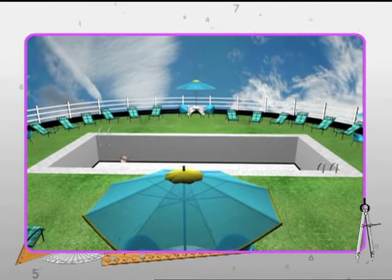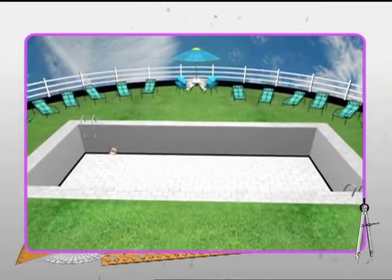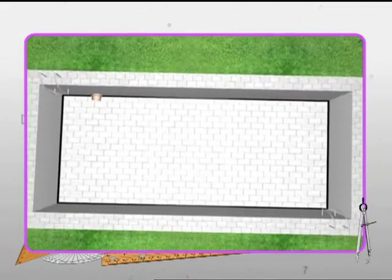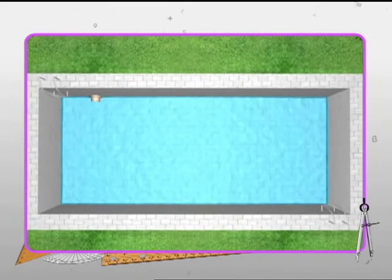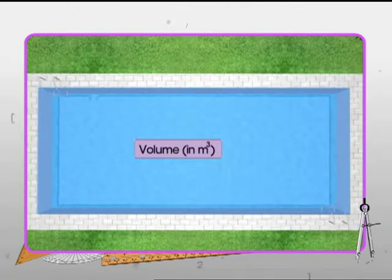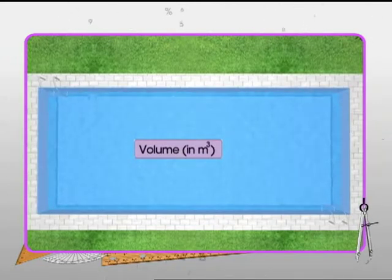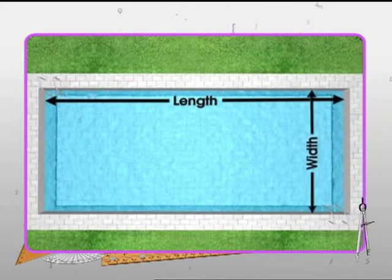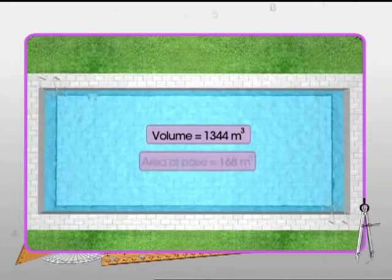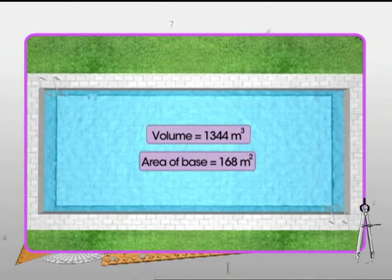Let's begin the module on division of polynomials with this illustration. A sports complex has a newly constructed swimming pool. This pool is cuboidal in shape. The amount of water that it can hold represents its volume or capacity. Volume of a cuboid can be computed by multiplying its length, width, and height.